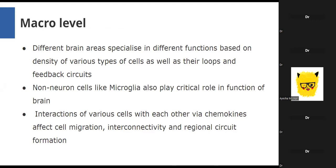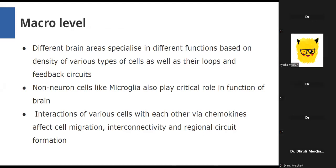At the macro level, different brain areas specialize in different functions based on different types of cells present and their connections with neighboring and distant cells—what we call circuits. This also includes functioning of non-neuron cells like microglia, which are the primary immune cells of the CNS. The interaction of these cells with each other via various chemokines affects cellular migration, cellular interconnectivity, and regional circuit formations.